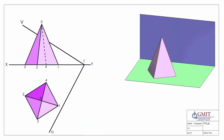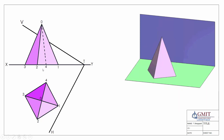This video follows on from our last video, which was how to locate the edge view of an oblique plane and find the true angle of inclination of our oblique plane to the horizontal plane. Here we can see our setup: the elevation and plan view of our pyramid, along with the vertical trace and the horizontal trace of our oblique plane.